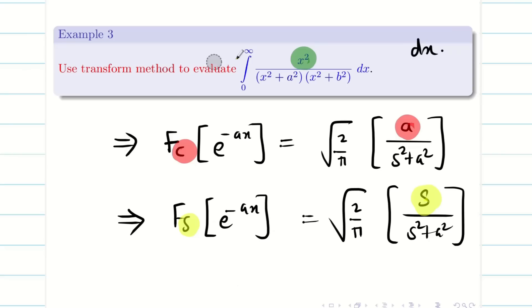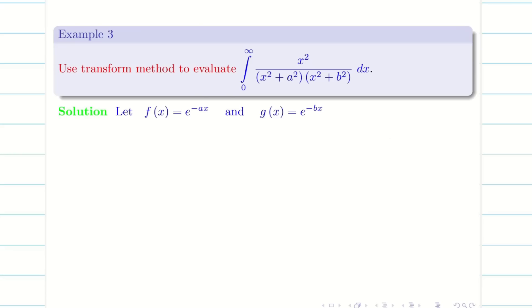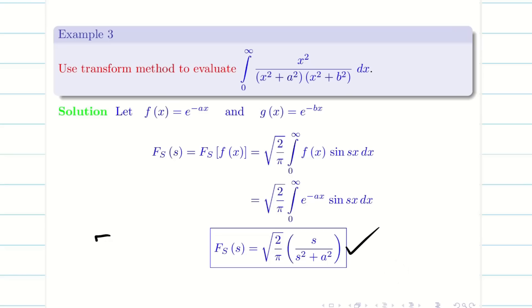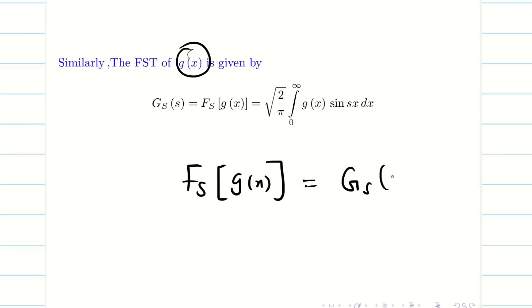Now see this problem: we have x² divided by (x²+a²)(x²+b²). I am going to use Fourier sine transform to find the value. Here I have two constants a and b, so I assume two functions: f(x) = e^(−ax) and g(x) = e^(−bx). Writing the Fourier sine transform formulae: Fs(f) = √(2/π) · s/(s²+a²), which I call Fs(s). Similarly for g(x), Fs(g) = √(2/π) · s/(s²+b²), which I call Gs(s).